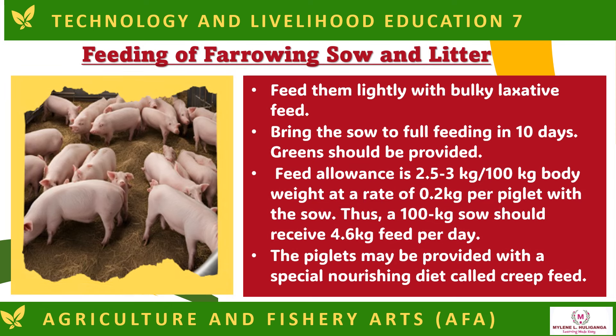Feeding of farrowing sow and litter: feed them lightly with bulky laxative feed. Bring the sow to full feeding in 10 days; greens should be provided. Feed allowance is 2.5 to 3 kilograms per 100 kilograms of body weight, at a rate of 0.2 kilograms per piglet with the sow. Thus, a 100-kilogram sow should receive 4.6 kilograms of feed per day. Piglets may be provided with a special nourishing diet called creep feed.